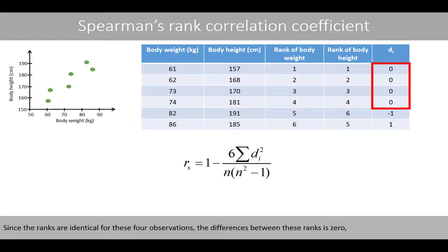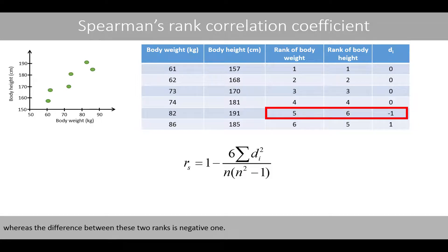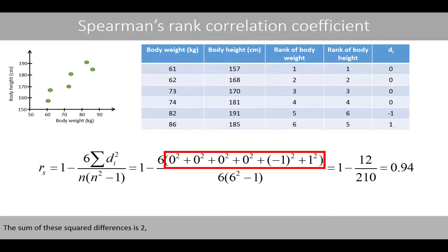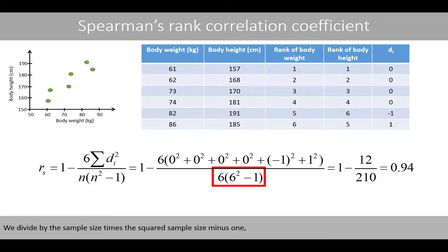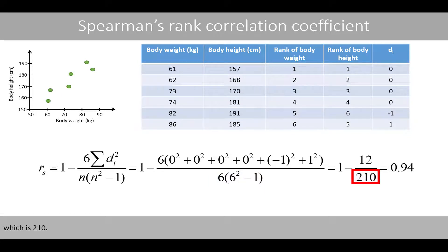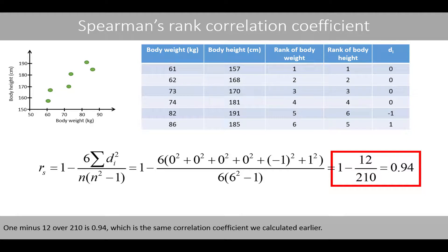Since the ranks are identical for these four observations, the differences between these ranks is 0, whereas the difference between these two ranks is negative 1. The sum of these squared differences is 2. If we multiply by the constant 6, we get 12 in the numerator. We divide by the sample size times the squared sample size minus 1, which is 210. 1 minus 12 over 210 is 0.94, which is the same correlation coefficient that we calculated earlier.